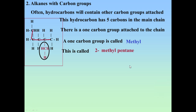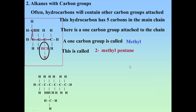Now take a look at the next one. Where's the longest hydrocarbon chain? One, two, three, four, five. One, two, three, four, five, six — you can get six carbons going this way, so that's got to be the main chain.